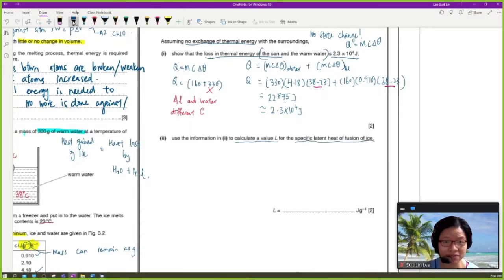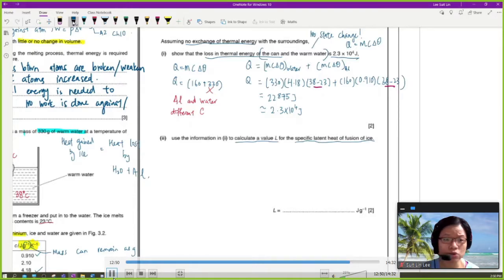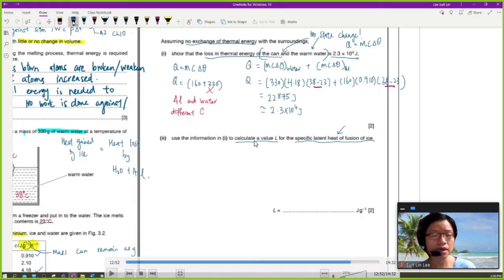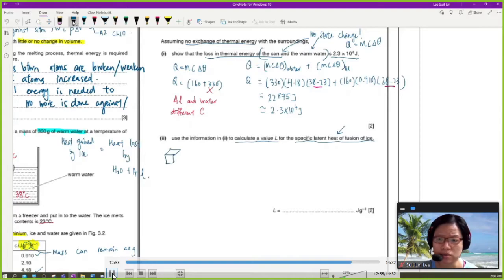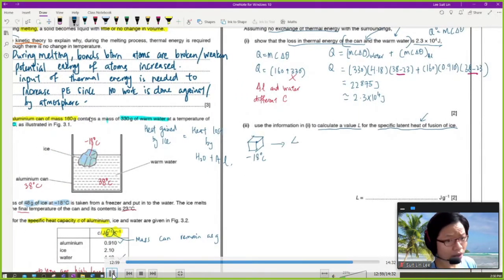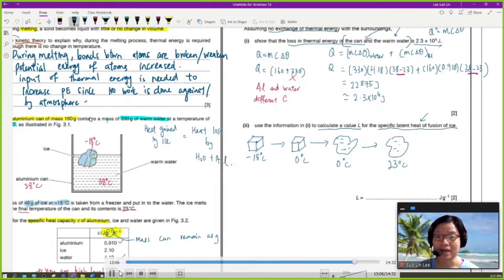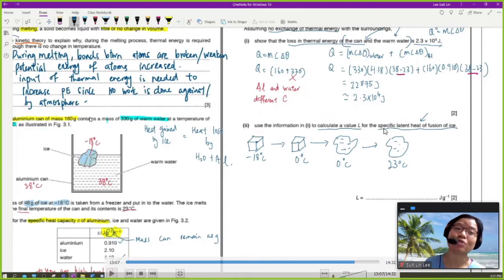So now calculate the specific latent heat of fusion of ice. Now here I would like you to pause the video and think a bit. There is state change. Can I just use Q equal to ML? Pause and think first. I give you a few seconds. Now, if you say yes, there are a few things that you forgot to look at. For example, can negative 18 degrees Celsius ice straight away become water? Cannot. We need to bring it first to melting point. So we need to bring negative 18 degrees Celsius ice to zero degrees Celsius ice. And then we need to change it to zero degrees Celsius water. And then we need to change it to 23 degrees Celsius water. So it's a many-step process. A lot of times, students forget that the temperature needs to be changed first.